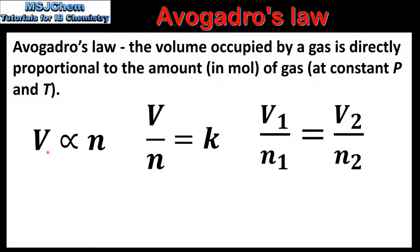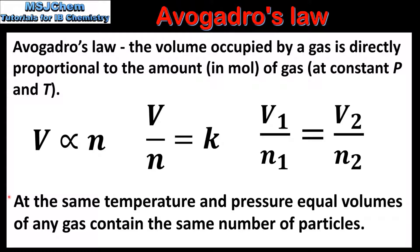This can be shown as V is directly proportional to N, V over N equals a constant K, or V1 over N1 is equal to V2 over N2. Avogadro's law can also be expressed as the following: at the same temperature and pressure, equal volumes of any gas contain the same number of particles.